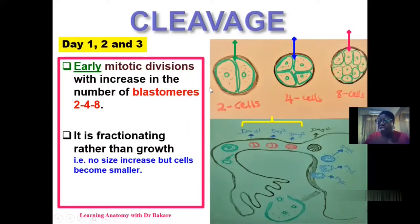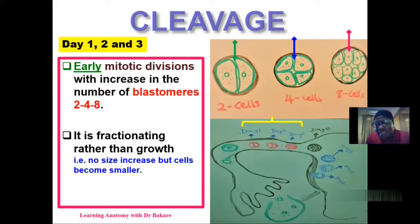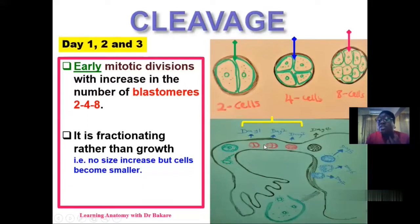This division tends to be more of a fractionating process than a growth process. If you look at the size of the dividing cells from the first day to the third day, you see that there is no increase in size. Even though there is an increase in the number of cells, there is no corresponding increase in size. It's more of a fractionating process whereby the cell continuously divides, but there is no corresponding increase in size.